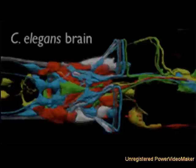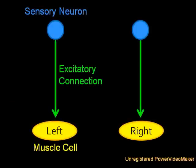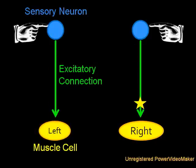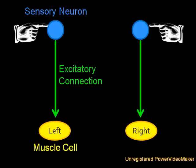Here we see two simple input-output circuits. An input to the left results in the left muscle contracting. An input to the right results in the right muscle contracting. Now let's add an intermediate neuron that also happens to synapse onto itself.